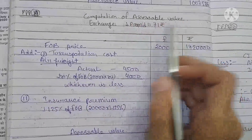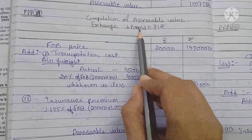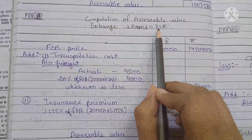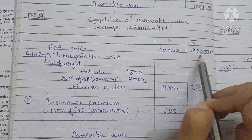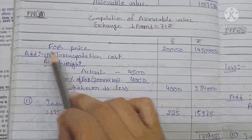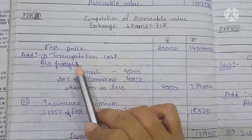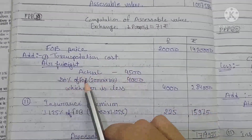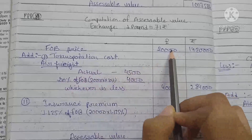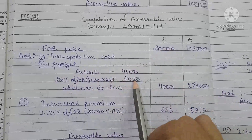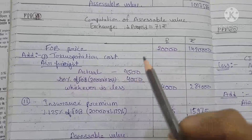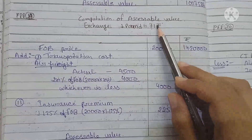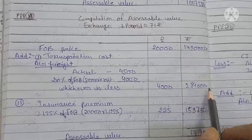Computation of assessable value: Exchange rate £1 = ₹71. FOB price is £20,000 multiplied by ₹71 gives ₹14,20,000. For transportation — since it was air freight — we compare actual freight $4,500 with 20% of FOB. FOB is £20,000; 20% of FOB is £4,000. Actual freight is higher so we take 20% of FOB: £4,000 × ₹71 = ₹2,84,000.